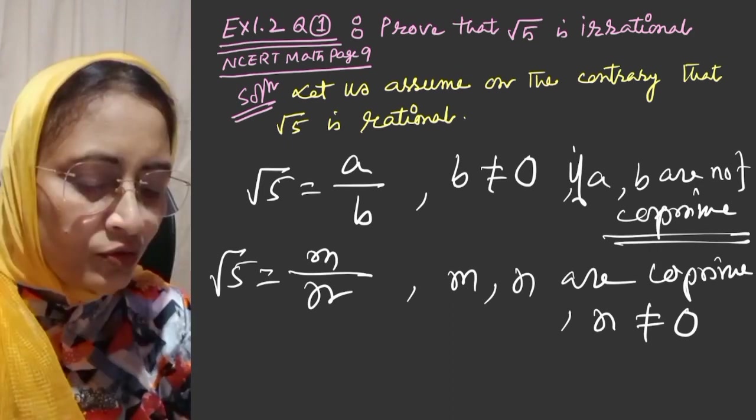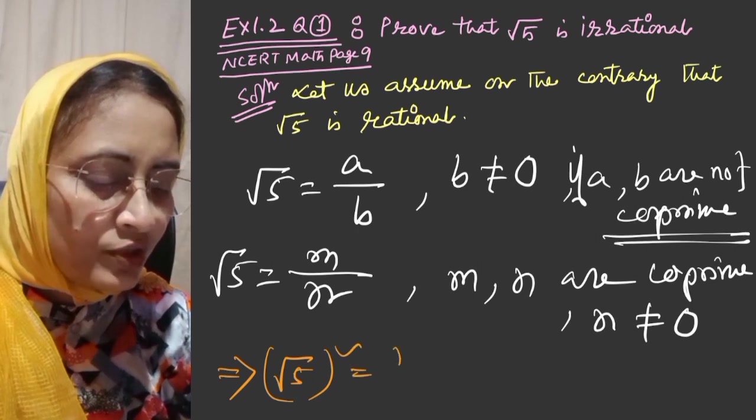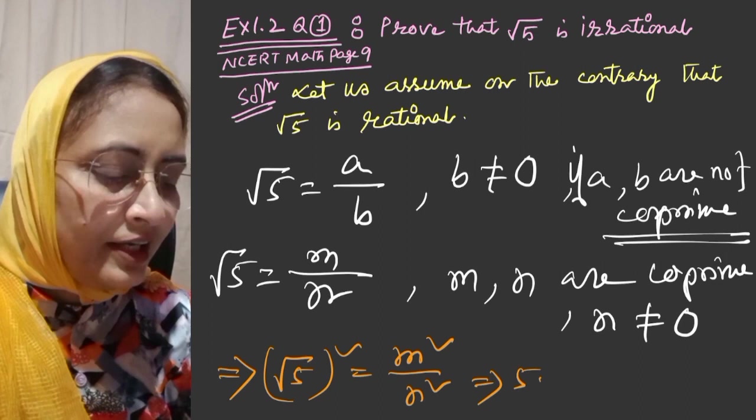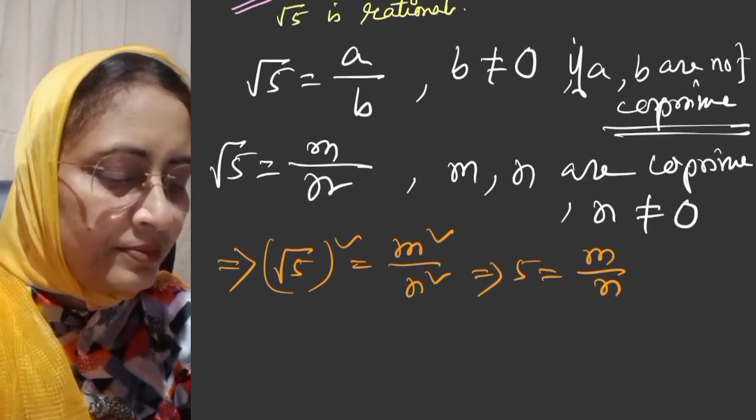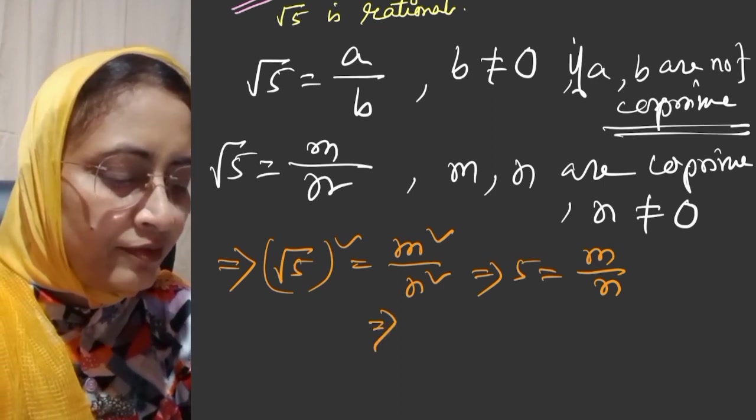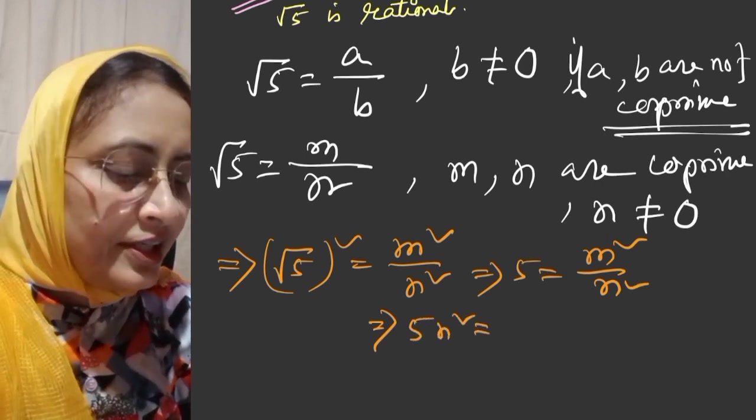So root 5 whole square is equal to m square by n square. This implies 5 is equal to m square by n square. Cross-multiplying, we get 5n square is equal to m square.